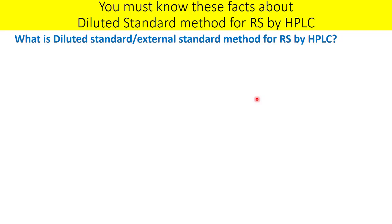The specification for known impurities can be different. For example, you have impurity A, B, and C. The specification for impurity A is not more than 0.3%, for impurity B not more than 0.6%, and for impurity C not more than 0.9%. So are you going to make the diluted standard at 0.3%, 0.6%, or 0.9%? There is quite some confusion. There is nothing wrong in choosing either specification, but is there a more neutral option?